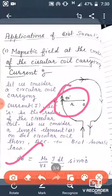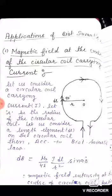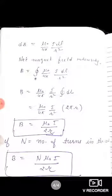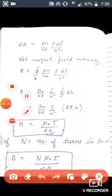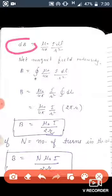According to Biot-Savart's Law, the magnetic field intensity dB due to length element dl at the center of the circular coil is: dB = μ₀/4π · i·dl·sin(90°) / r². Since theta is 90°, sin(theta) equals 1, so dB = μ₀/4π · i·dl / r². This is the small value of magnetic field intensity due to the length element.